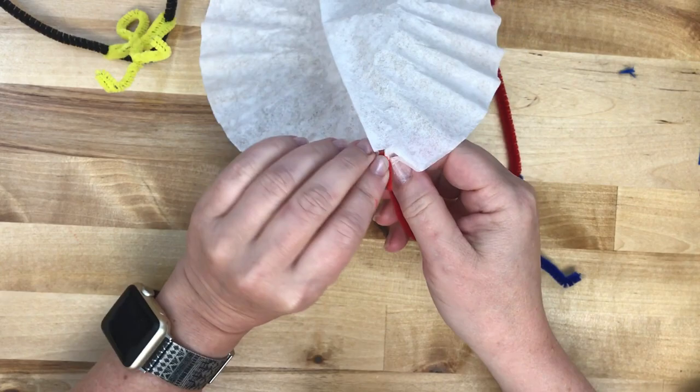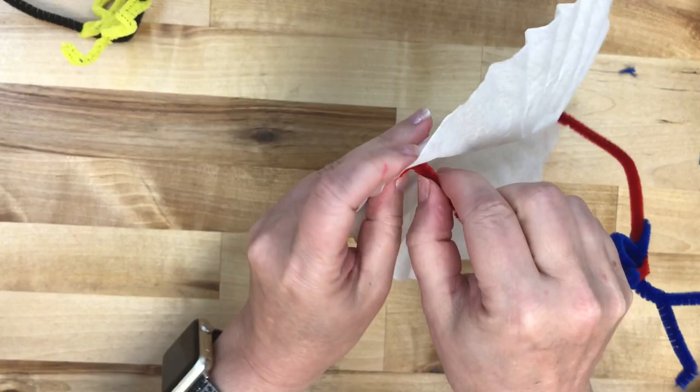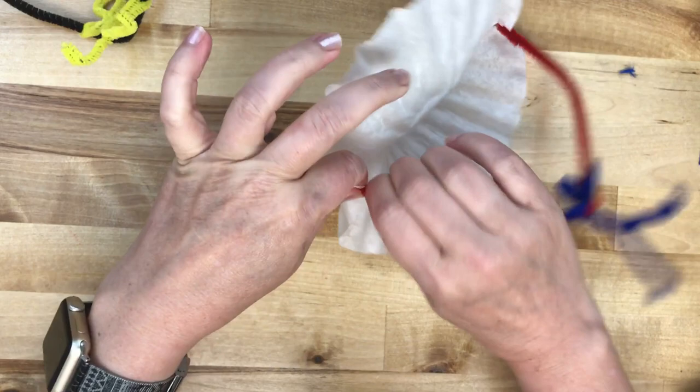If you want a little more security you can twist it. That way when your kid throws it all crazy, it'll stick around. There we go. And that's basically it.